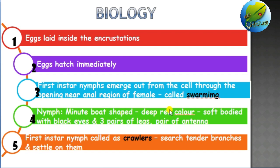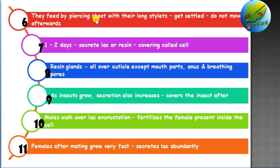The nymph is deep red in color, minute and boat-shaped, having black eyes and three pairs of legs — only during the first instar. These first instar larvae are called crawlers. They search for tender branches, settle there, and start to feed by piercing with their stylets. After one to two days, they secrete lac or resin covering themselves — called the shell. The resin glands all over the body secrete the substance, covering the whole body except the mouth parts, anus, and breathing pores.